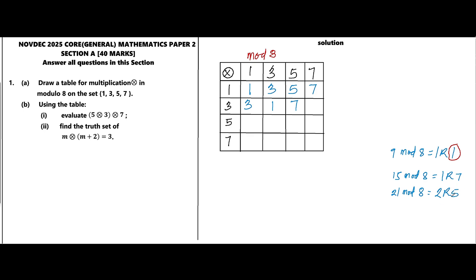So 3×7 gives remainder 5 in mod 8. Moving on: 5×1=5, which in mod 8 is 5. 5×3=15, and 15 in mod 8 we already calculated as 7. 5×5=25, and 25 in mod 8: 8 goes into 25 three times (8×3=24), so the remainder is 1 — giving 1 in mod 8. Then 5×7=35.